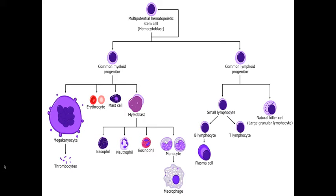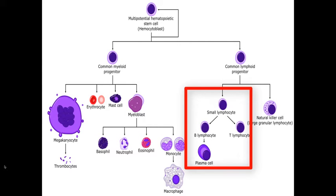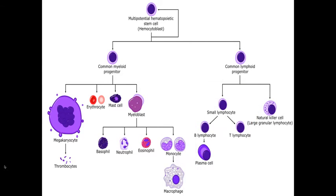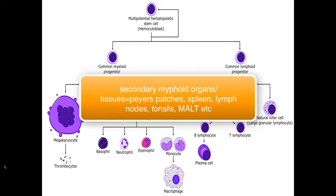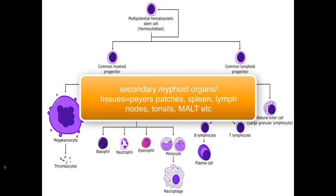The lineage needed right now is the small lymphocyte lineage, which has two portions: the B cells and T cells. You also have your secondary lymphoid organs, which function to expose different types of antigens to your lymphocytes. The secondary lymphoid organs include mucosa-associated lymphoid tissue, Peyer's patches of your small intestine, your spleen, your lymph nodes, your tonsils, and some others.